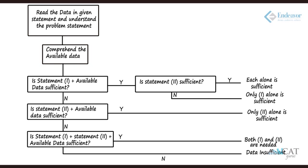After identifying what is needed, we start reading the statements. If we read statement one and the available data is sufficient, we proceed to the next step. If it is sufficient, we then check the second statement as well. If it is not sufficient, we proceed along a different path.